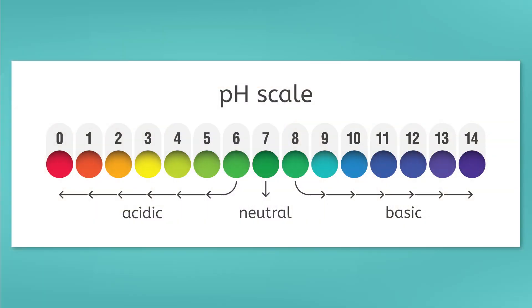The pH scale is a range of numbers from 0 to 14 that indicate how acidic or basic a solution is. If the pH value is less than 7, the solution is acidic, and if it is greater than 7, the solution is basic. If the pH is equal to 7, then the solution is considered neutral.